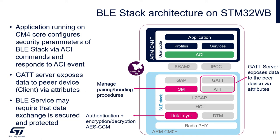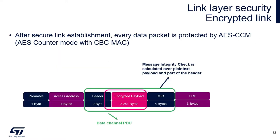The user application runs on the Cortex-M4, which interfaces with the RF stack over a high-level command interface called ACI — Application Command Interface. The user application sends commands towards the BLE stack, and in the other direction the BLE stack may send ACI events towards the application to process. When the link is encrypted, the payload of every single data packet is encrypted, plus there is a 4-byte message integrity check calculated over the plaintext payload plus part of the header. The cryptography scheme is AES in counter mode with CBC-MAC — symmetric cryptography.